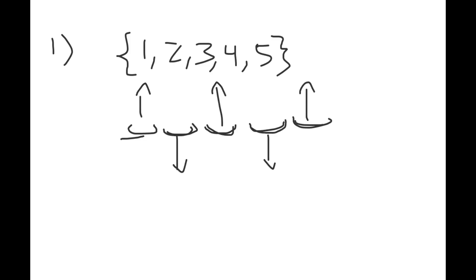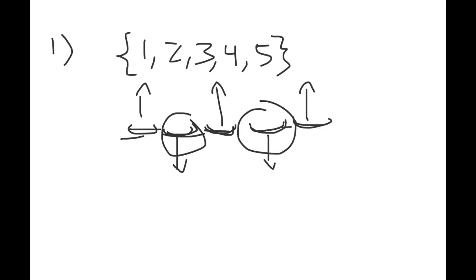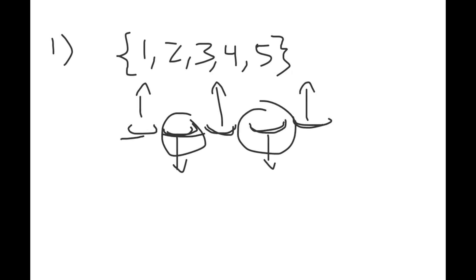One thing we want to realize is that the two smaller positions — the ones that are each smaller than their neighbors — must include the value 1, since 1 is smaller than all other numbers. So we know that one of those positions must be 1.